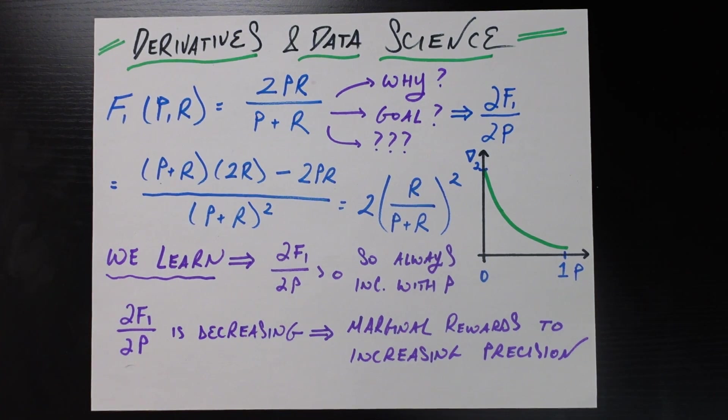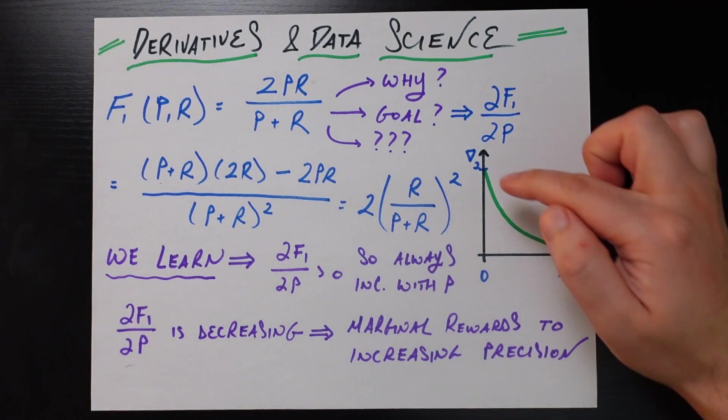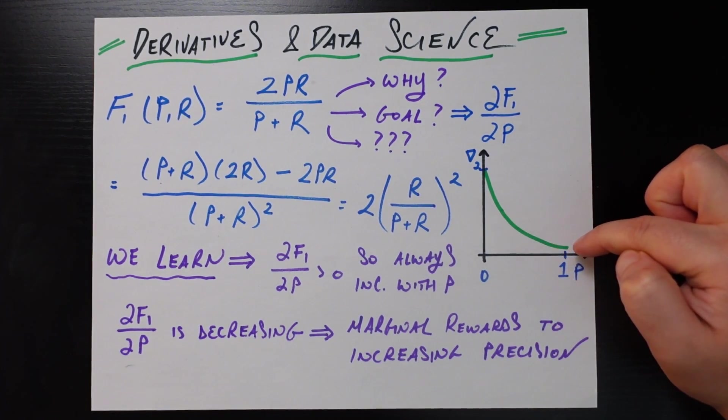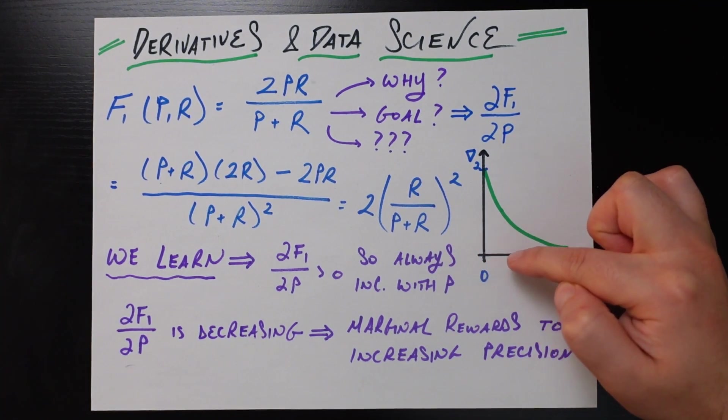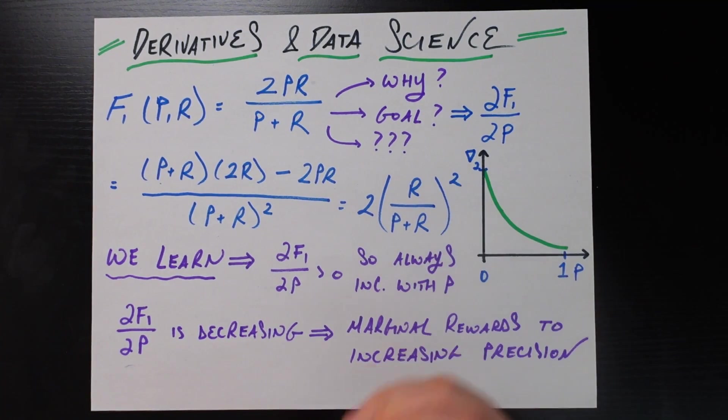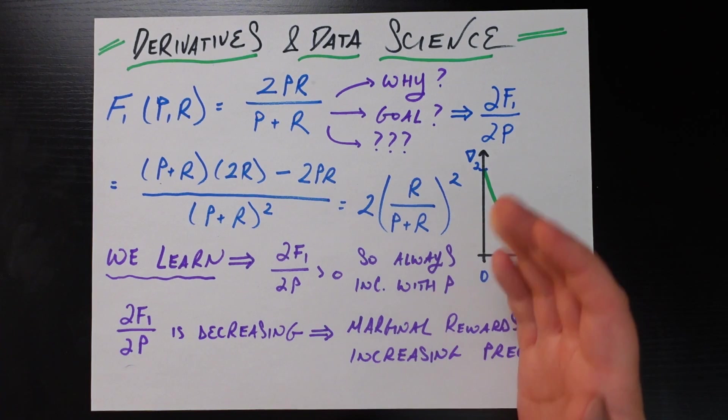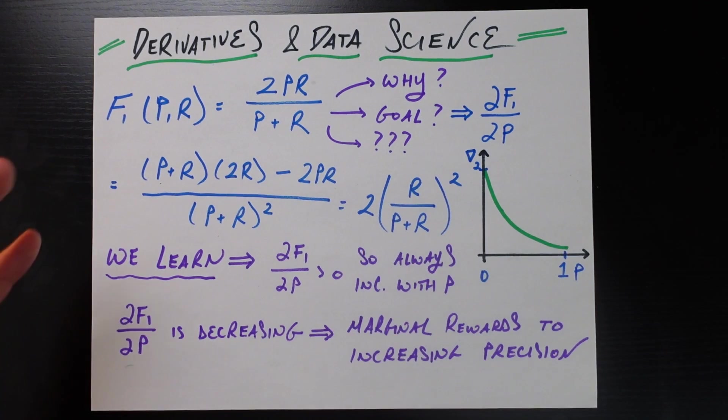And the second part of that story, maybe the more important part of that story, is that even though you're going to be increasing F1 score as your precision goes up, the rate of that increase is going down. It starts rather high, so if you have a precision of zero, you get a lot of points. You get a lot of increase in F1 score if you increase your precision by just a little bit. What that's saying in human terms is that your precision is trash right now.